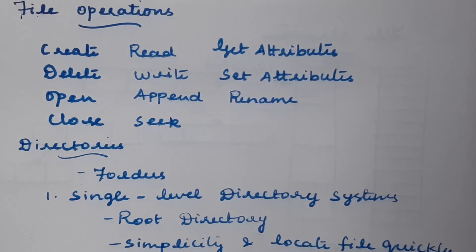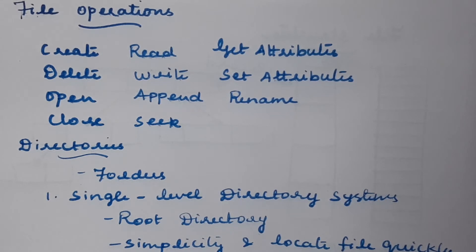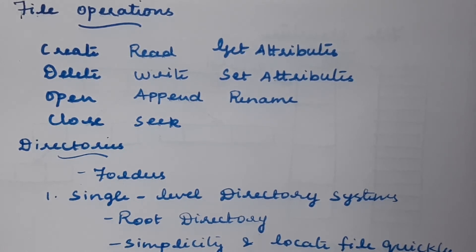If you want to read any content from the file, you use the 'read' operation. The read operation moves to the next entry or location in the file using a pointer, which is incremented separately for read and write operations. The 'append' system call is used when you want to add new content in addition to the existing content in the file.